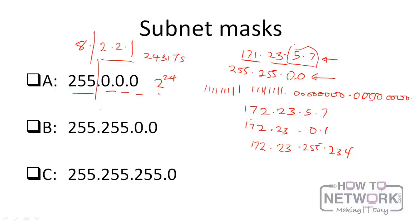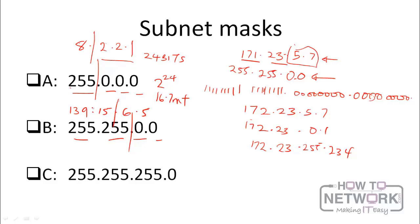For class A, the default subnet mask is 255.0.0.0, meaning only the first octet defines the network. A class A address like 8.2.2.1 shares its network with everything starting with 8, and has 24 bits remaining for the host — that's 2 to the power of 24, or about 16.7 million hosts per network. That's really too large; in a broadcast domain with 16 million devices, a single broadcast reaches all of them. Class B reduces the host count by increasing networks, using subnet mask 255.255.0.0.